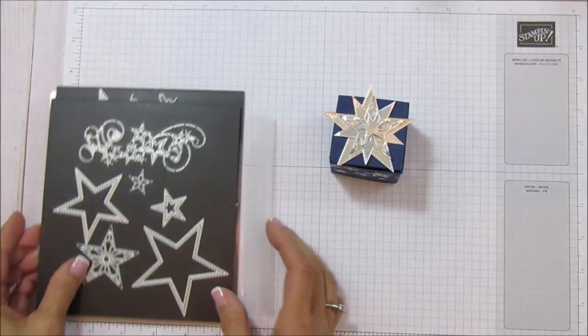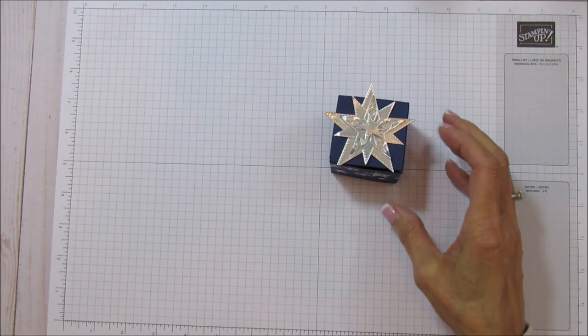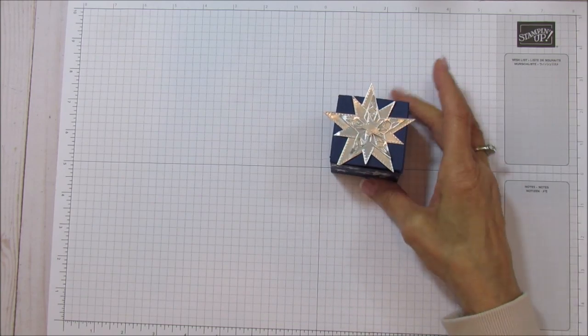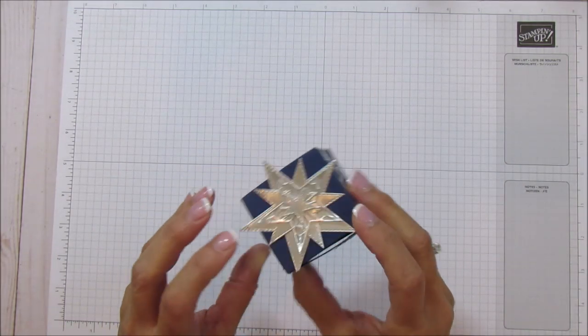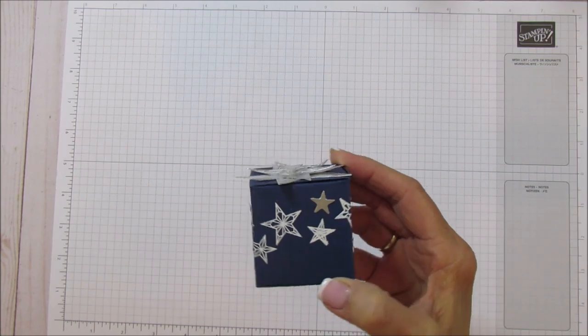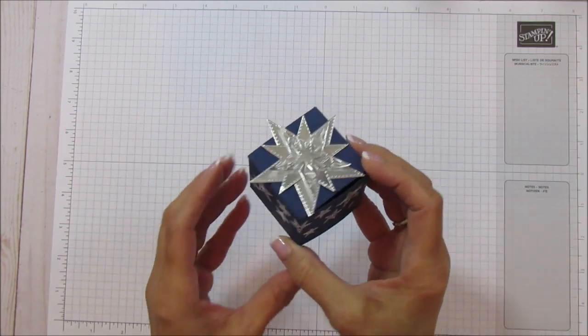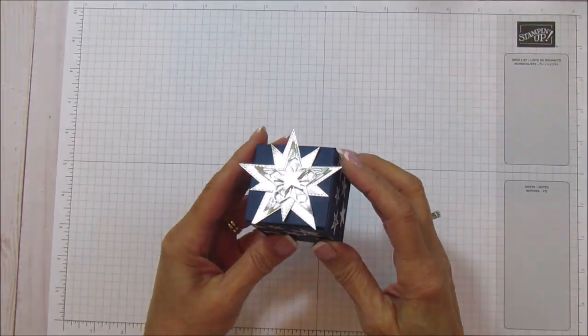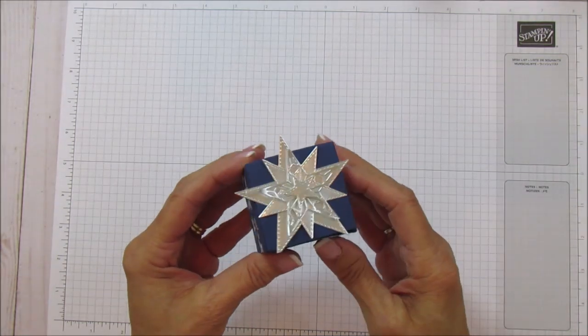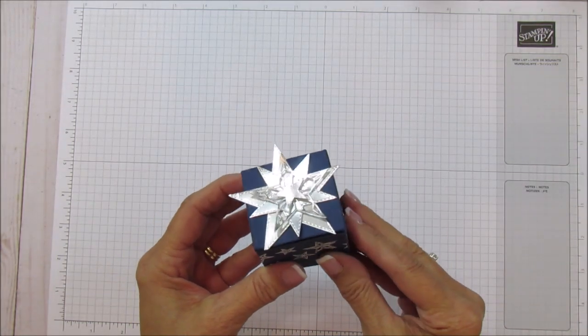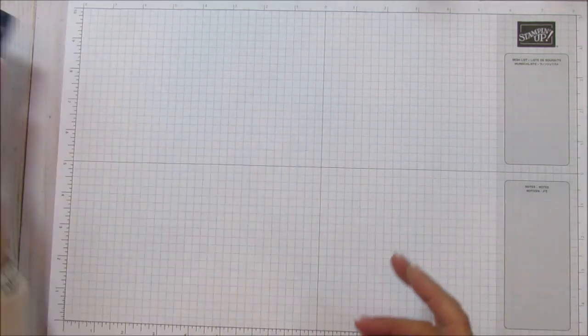This is all I used for this project right here - the dies that I used. Then we're gonna use the Night of Navy because I thought it was so elegant with the silver foil. You can put a sentiment on here if you like, but I just really love the stars. So let's go ahead and get started with this.